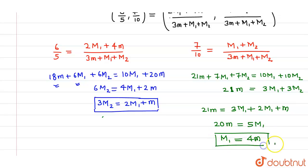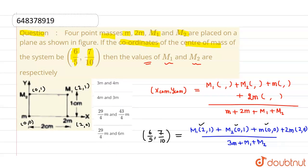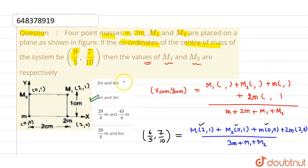With M1 equal to 4m, the value of M2 is (8 + 1)m divided by 3, which comes out to be 3m. So M1 equals 4m and M2 equals 3m, which is given in option 2. Option 2 is correct and all other options are incorrect. I hope you understood, thank you.